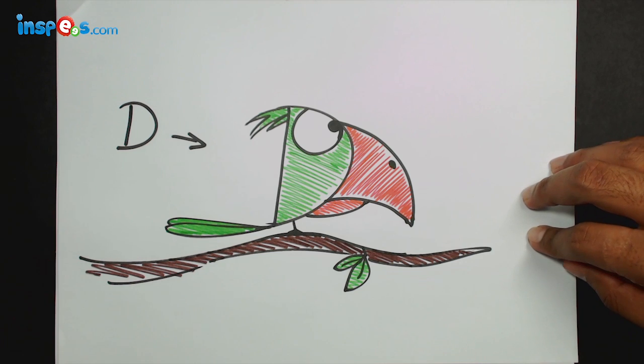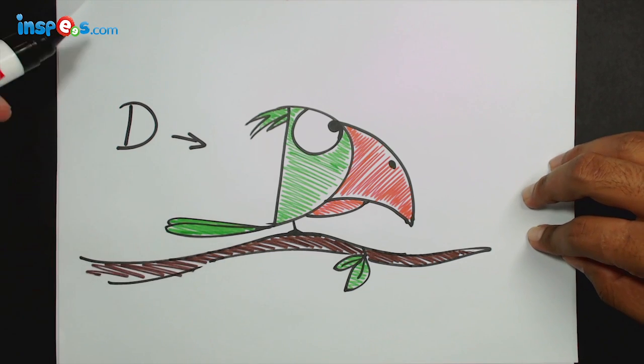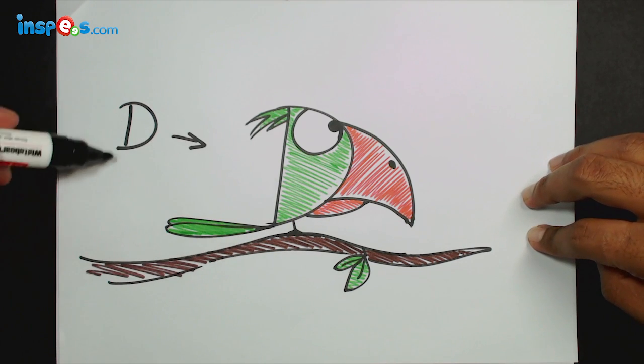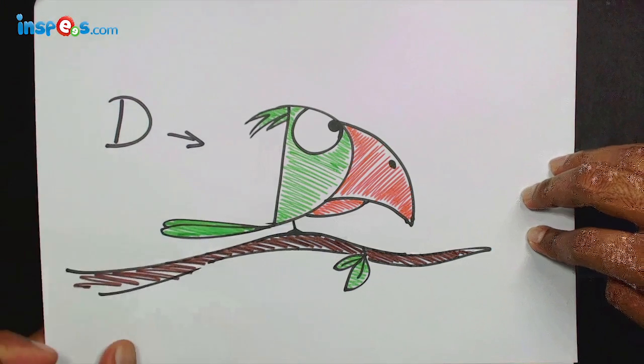Hi, thanks for joining me. Today I'm going to show you how to draw a Karuni parrot using an alphabet D here. So here we go.